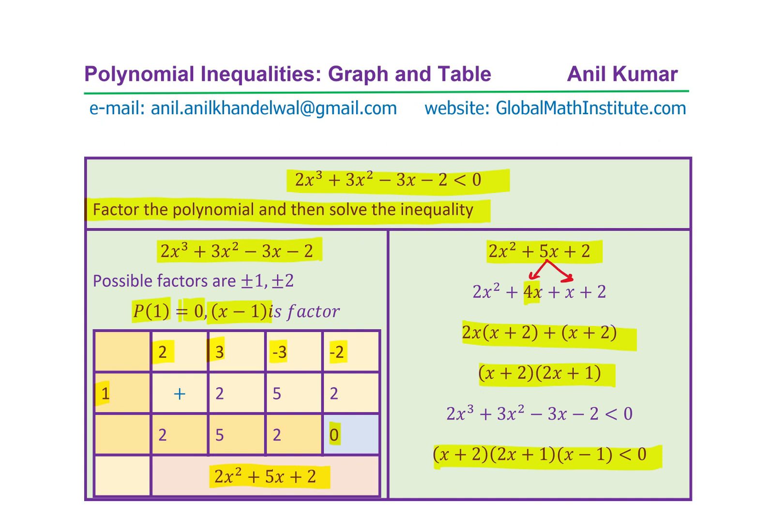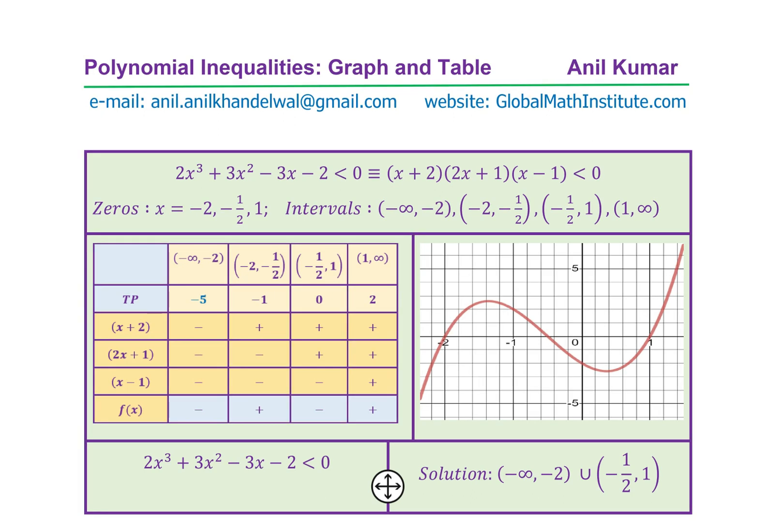Now, once you have the factored form, we can actually graph or we can do the interval table. So we'll see how do we now write down the solution. As I was saying, the equation can now be written in the factored form, which is (x + 2)(2x + 1)(x - 1) < 0.